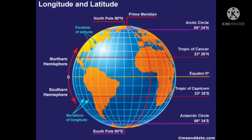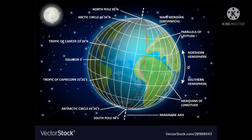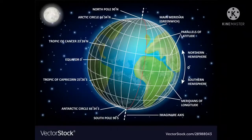Here we are going to learn longitude and latitudes. First, let us learn what latitudes are. A set of lines can be drawn between two poles, parallel to the equator. These lines are called latitudes or parallels.